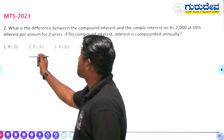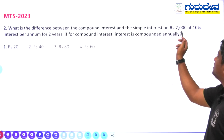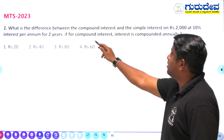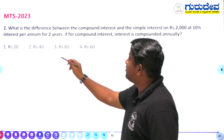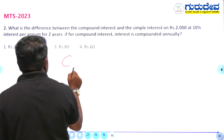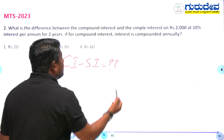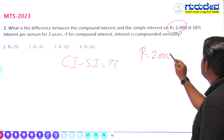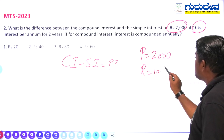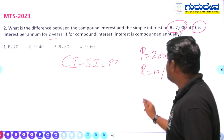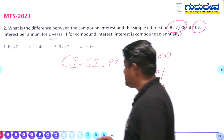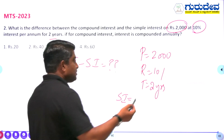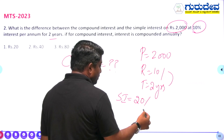Second question: what is the difference between compound interest and simple interest on ₹2000 at 10 percent per annum for two years, with interest compounded annually? The principal is ₹2000, rate r = 10 percent, time = 2 years. For simple interest, rate × time = 10 × 2 = 20 percent.